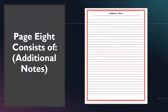Page seven continues family relationships, this time with the children. Finally, page eight consists of additional notes. As you can see, we are in the month of February, so each month the printable changes according to the month and the different holidays in that month.